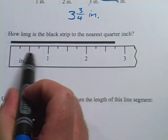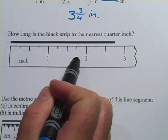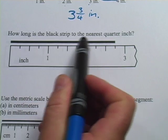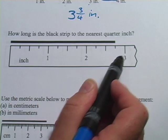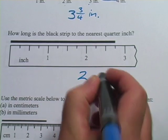This ruler has fewer marks on it. You can see they haven't divided it down into eighths. It says, how long is the black strip to the nearest quarter inch? And we've got one, two. And this is somewhere between two and three. So it's going to be two inches and some fraction of an inch.